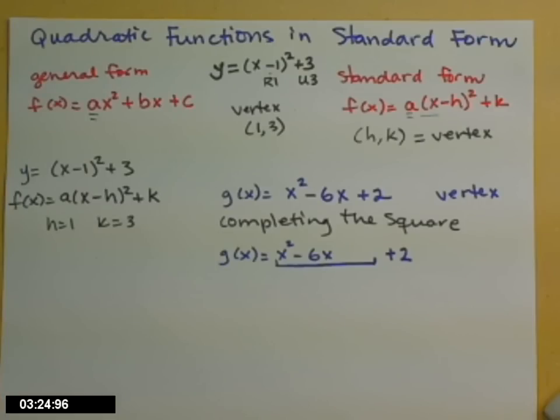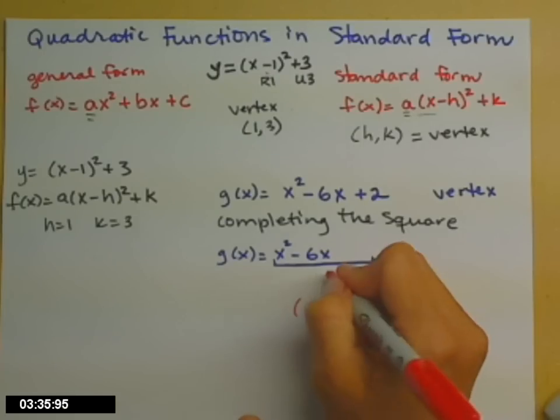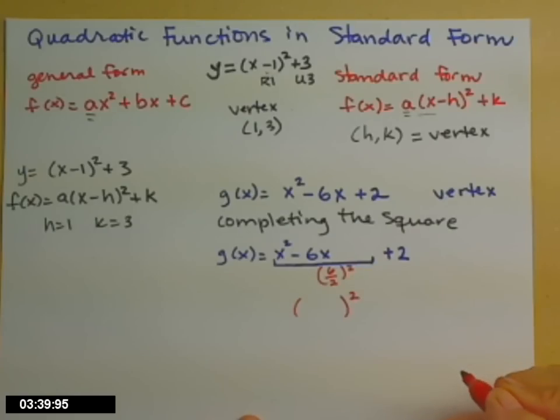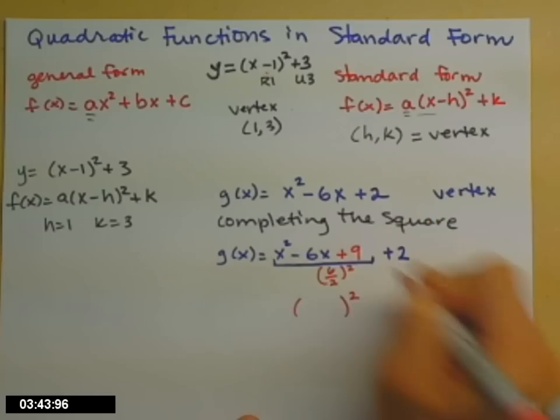And now I have to figure out what the constant term is that goes inside that box, so that I can factor into some binomial squared. So we take the linear coefficient, 6, take half of it, and square that number. So 6 over 2 is 3. 3 squared is 9. So I'm going to add 9 inside.